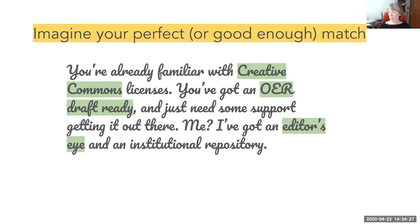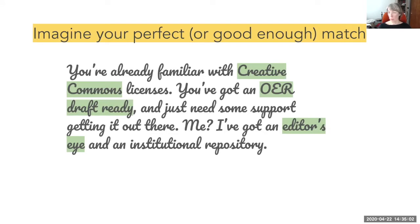And finally, for a different type of publishing program: 'You're already familiar with Creative Commons licenses, you've got an OER draft ready, and you just need some support getting it out there. Me — I've got an editor's eye and an institutional repository.' Maybe it's too soon for you to be involved in the development of an open textbook, or maybe you never want to be. It's very possible that there's someone out there who already has a textbook draft and is just looking for a way to disseminate it — and you and the library are probably in a great position to help them.